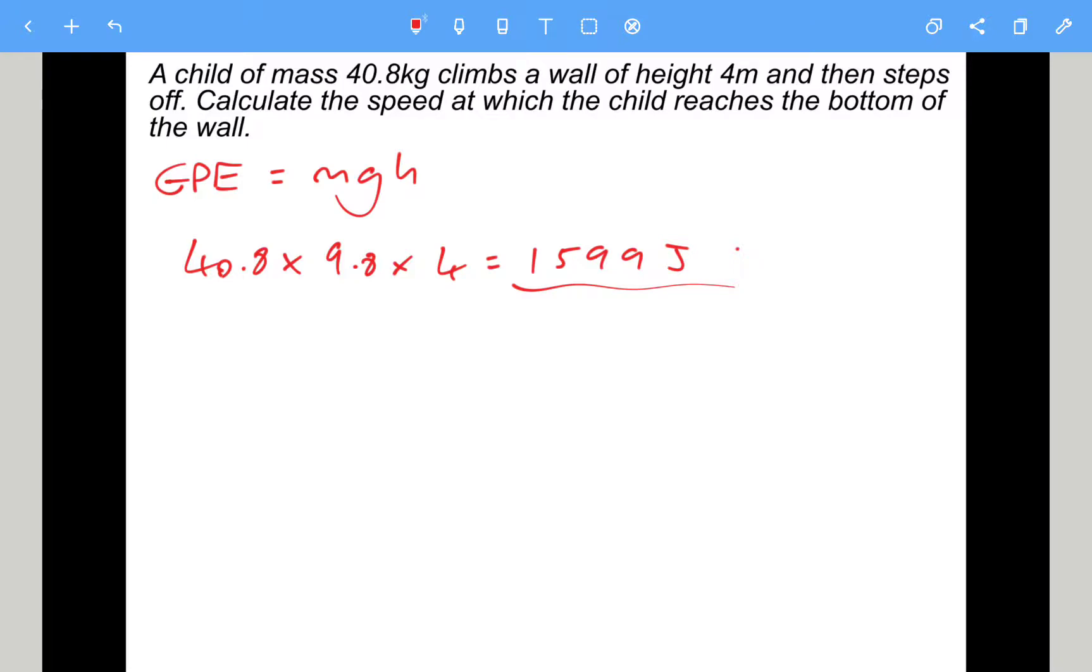Now what's going to happen is that gravitational potential energy, the loss of gravitational potential energy, is going to be equal to the gain in kinetic energy. So kinetic energy is a half mv squared. We've got the energy, the 1599. We've got the mass, we need to rearrange to find the speed.